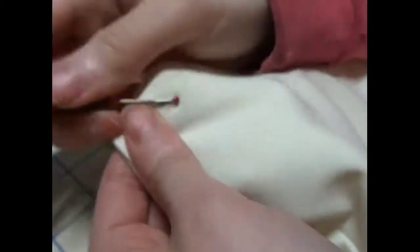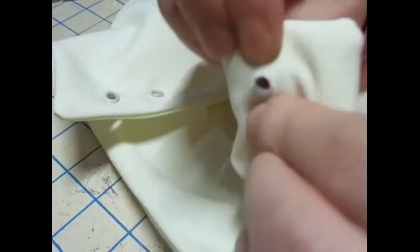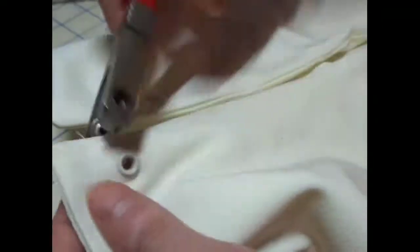For my specific grommets, I just marked out the places that I wanted them, made a small hole, and inserted the grommet inside, and then used the tool that came with my grommets to close it shut. Depending on what kind of grommets you may have, the steps to your grommets may be slightly different than this.